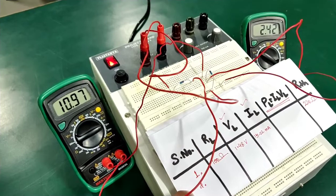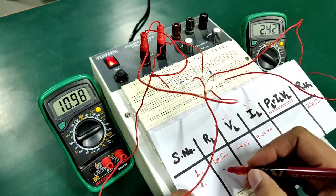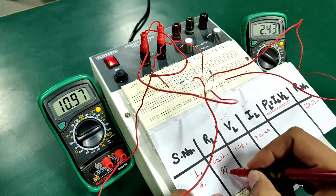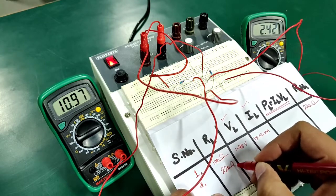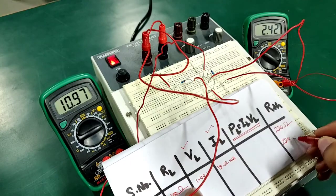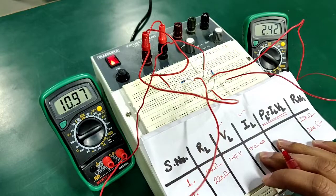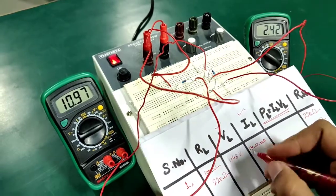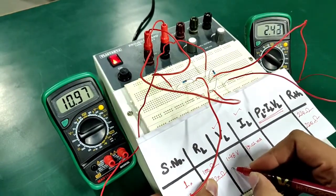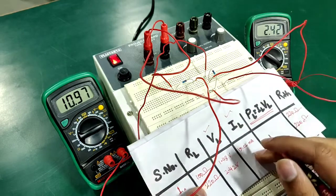Moving on to case number two, here I have replaced RL with a resistance equal to 220 ohms and Rth has been kept constant which is 220 ohms. So the resulting voltage and currents are 2.42 volts and 10.97 milliampere.